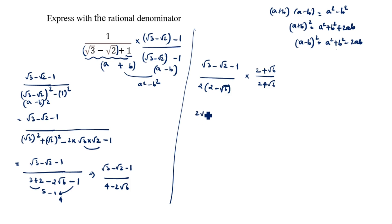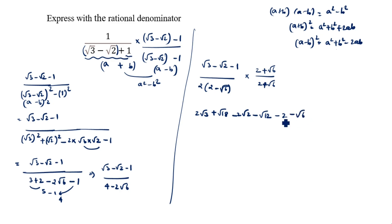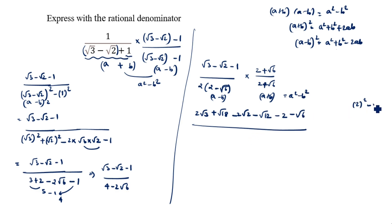Multiplying out gives: 2 root 3 plus root 18 minus 2 root 2 minus root 12, then minus 2 minus root 6 in the numerator. The denominator uses the (a - b)(a + b) formula: 2 squared minus root 6 squared equals 4 minus 6 equals minus 2. So the overall denominator becomes 2 times minus 2, which is minus 4.